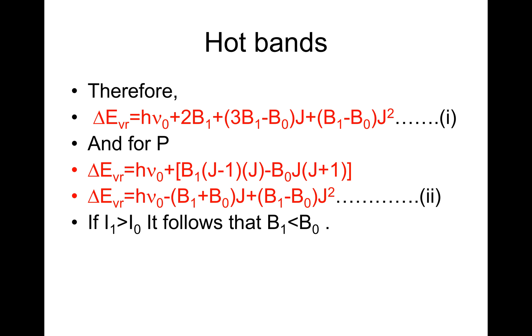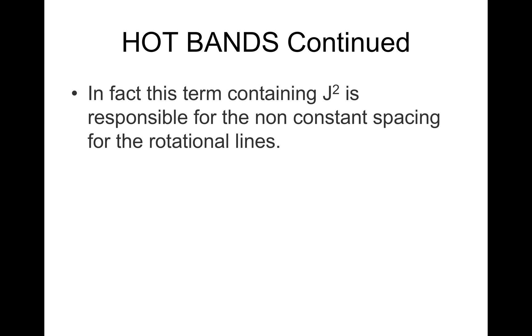If I1 is greater than I0, it follows that B1 is less than B0. Therefore, coefficients of J squared in 1 and 2 are negative. In fact, this term contains J squared. As J squared is responsible for the non-constant spacing for the rotational lines.